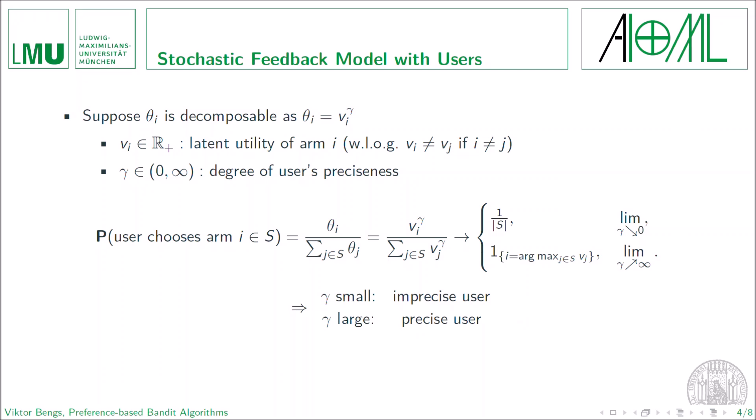So we see that with a small gamma, we can model an imprecise user who is making the choice more or less uniformly at random. And with a large gamma, we can model a precise user who will likely choose the arm having the highest utility within the preselection.